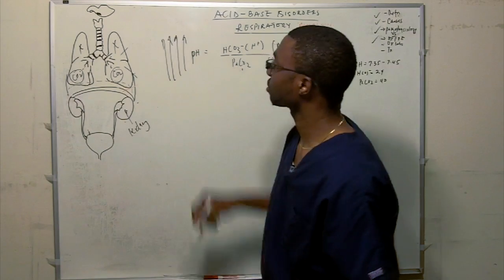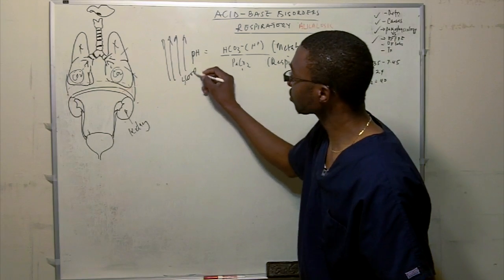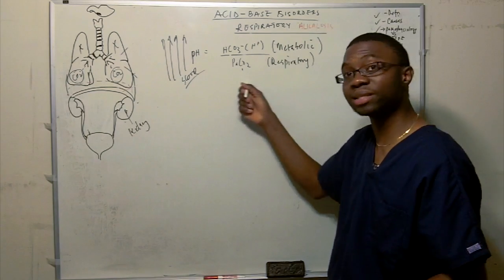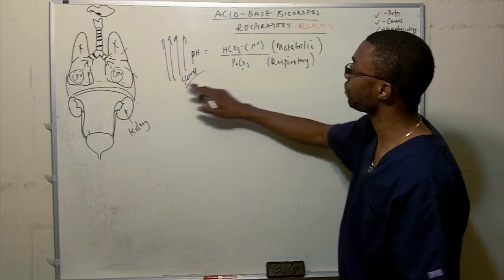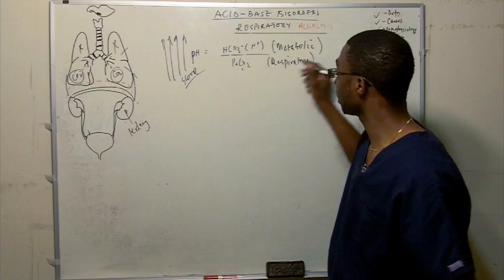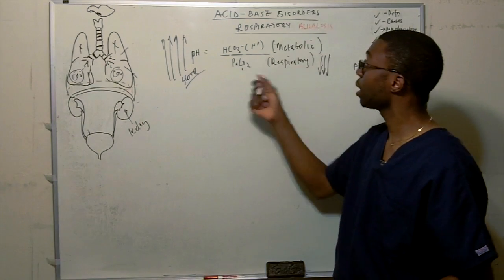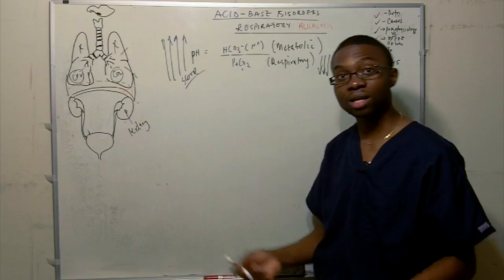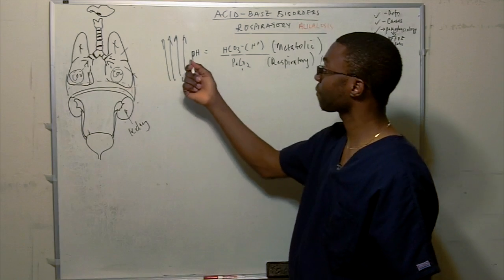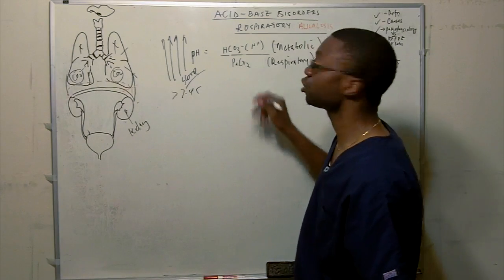Something is wrong. The pH is really high in the blood. And it's due to what? Because it's respiratory, so we're going to stay below the formula again. That means if your pH is going up on the top, the only way this could be happening, if it's respiratory alkalosis, alkaline means a lot of pH, pH greater than 7.45, that means PCO2 is low.